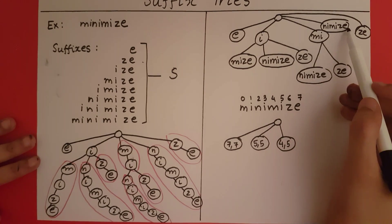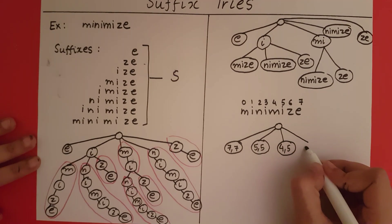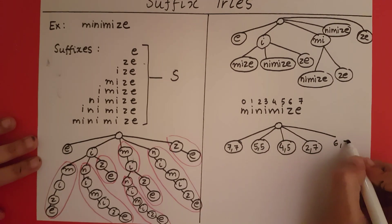Then I have nimize which starts at 2 and ends at 7, and then I have ze which starts at 6 and ends at 7.